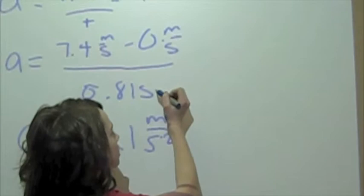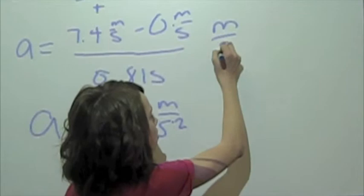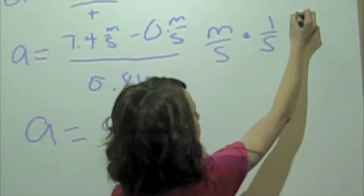And I got meters per second squared because, when you're dividing, you have to use the copy dot flip system. So, it's meters per second multiply by 1 over seconds. And then, you multiply across to get meters per second squared.